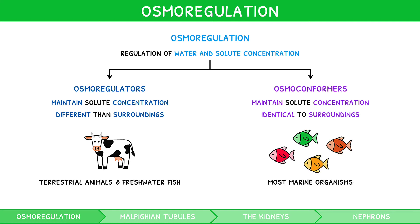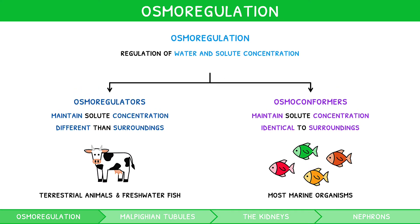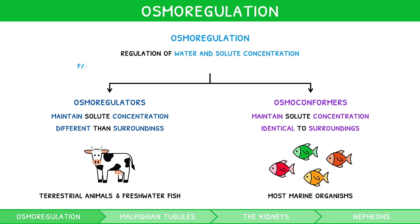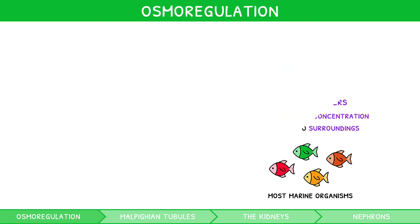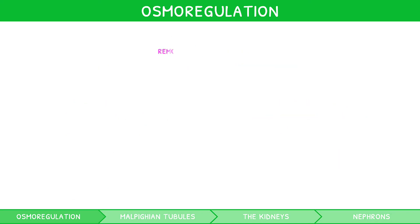Regardless of the method, osmoregulation is an important process to facilitate metabolic reactions and prevent accumulation of waste products. To further prevent toxicity, waste products are also continuously removed via the process of excretion.